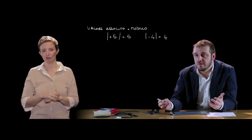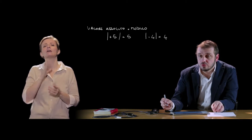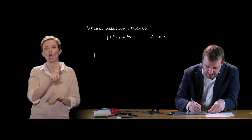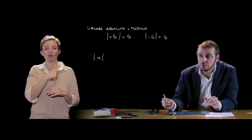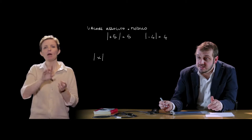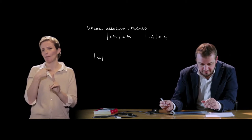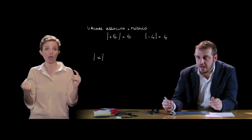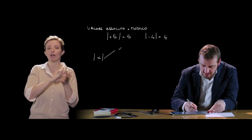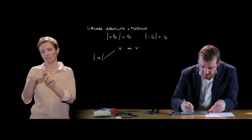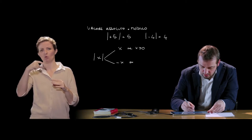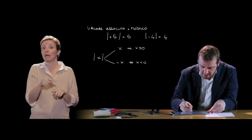The same concept applies when we want to calculate the absolute value of a variable, for example the variable x. The absolute value of a variable equals the variable itself if it is positive, while it equals the opposite of the variable if it is negative. So the modulus of x equals x if x is greater than or equal to 0, and equals -x for all values where x is negative.